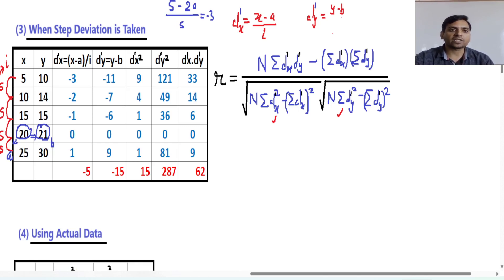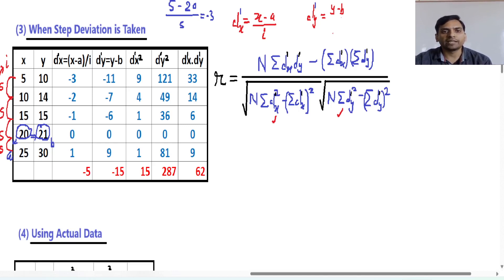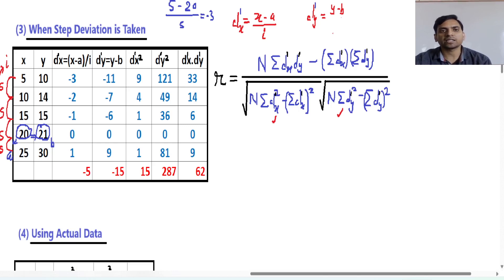Now you will find dy-dash. The formula for dy-dash is y minus b. The first value of y is 10 and b is 21, so simply 10 minus 21 equals minus 11. In the same way you can find 14 minus 21, 15 minus 21, and so on. The formula also requires dx-dash squared and dy-dash squared, so we create two columns for those, plus one column for the product of dx-dash and dy-dash.